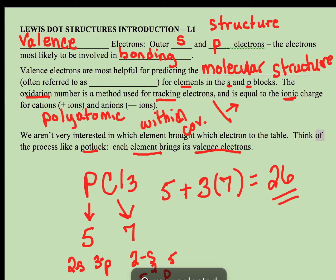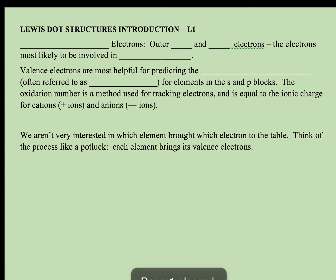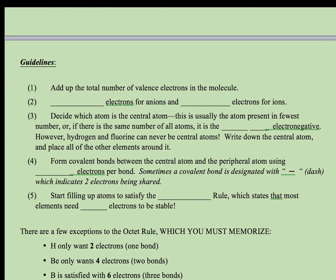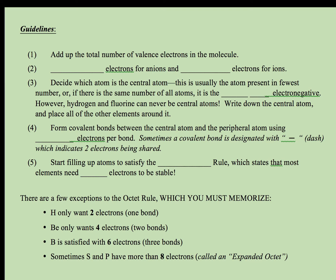Let's take a look at the guidelines first, and then I'll continue my example of PCl3. The first thing you want to do is add up the total number of electrons, which is what we did for that PCl3 example.